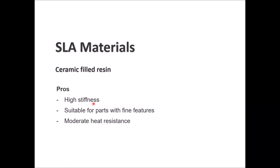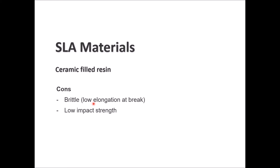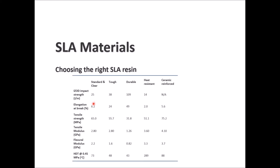Good sides for ceramic-filled resin: high stiffness and suitability for fine features with moderate heat resistance. A comparison matrix is provided to help choose the right SLA resin, listing material types — standard, clear, durable, heat resistance, and ceramic reinforced — alongside mechanical properties such as Izod impact strength, elongation at break in percentage, tensile strength in MPa, tensile modulus in GPa, flexural modulus in GPa, and high temperature resistance at 0.45 MPa.